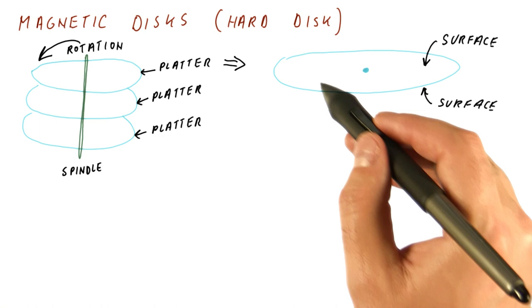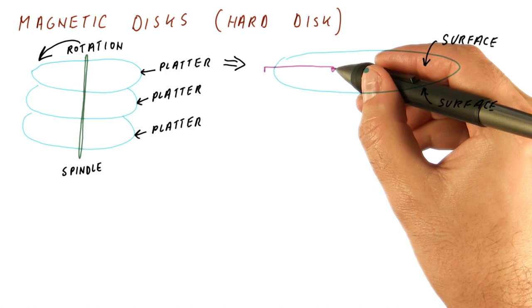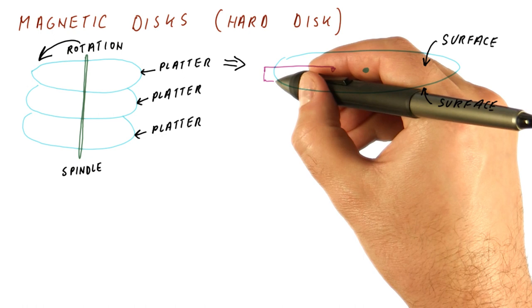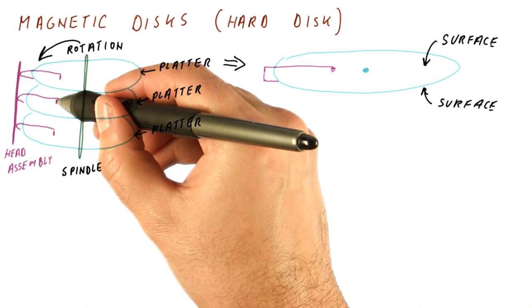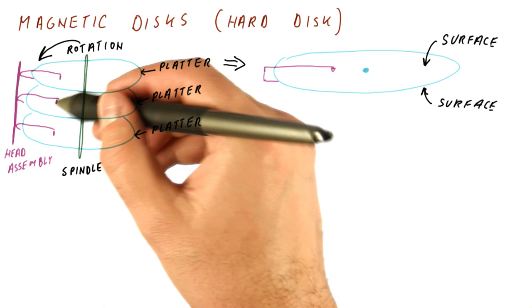We access this data by having a magnetic head attached to an arm and another one for the lower surface. And then all of these heads are attached to a head assembly, which can move all the heads in unison. So if this head is here, this head will be in the same position on another platter and so on. We don't individually move the heads, we move them all at the same time.